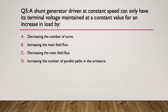Question five: a shunt generator is driven at a constant speed and can only have its terminal voltage maintained at a constant value for an increase in load by — A: decreasing the number of turns; B: increasing the main field flux; C: decreasing the main field flux; or D: increasing the number of parallel paths in the armature. Think this one through. Write out your formula for E — what proportions can you play with?